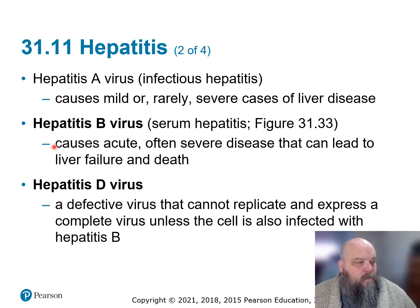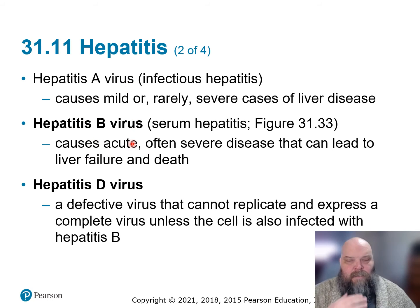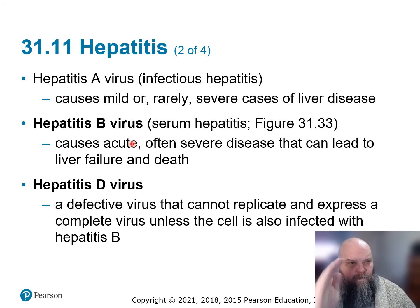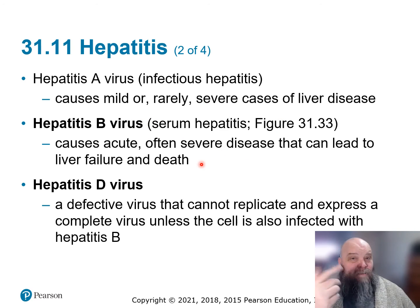What we see more often is B and D. Hep B is acute and often a severe disease — it can go zero to sixty very fast: liver failure, death. This is referred to as serum hepatitis. It gets spread more often than not due to sharing of needles.